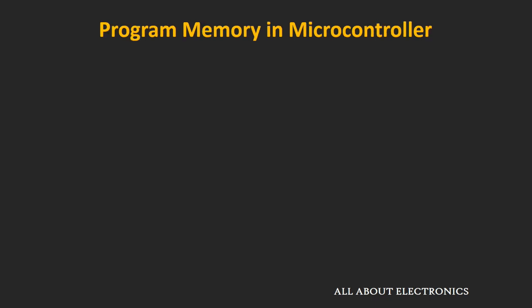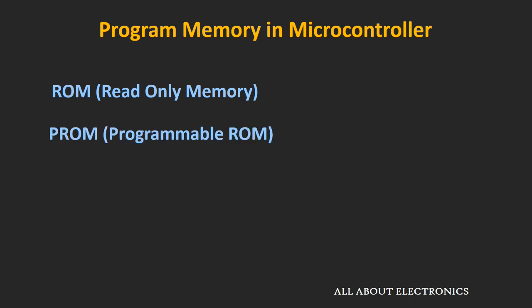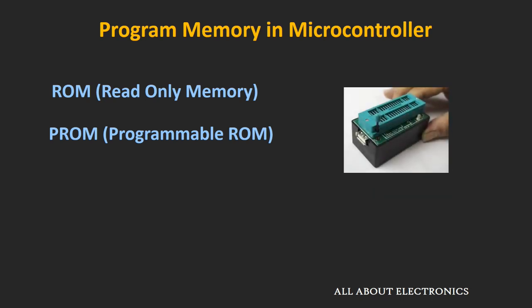First, let's see the evolution of program memory inside the microcontroller. In early days, read-only memory or ROM was used as the program memory. This ROM is a one-time programmable memory, meaning during the time of production itself, this memory is programmed — and once programmed, you cannot change the content inside. Then came the second type: Programmable ROM or PROM. PROM is also one-time programmable, but the user can program it using a programmer. However, once programmed, you cannot change the content of this PROM.